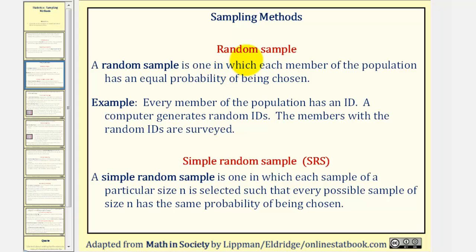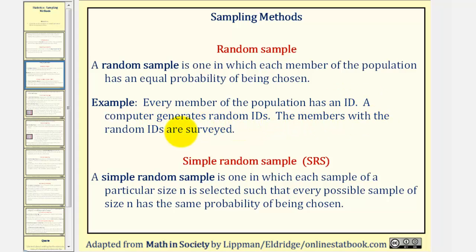The first method we'll discuss is a random sample, where each member of the population has an equal probability of being chosen. As an example, every member of the population has an ID, a computer generates random IDs, and the members with those random IDs are surveyed. This is an example of a random sample.